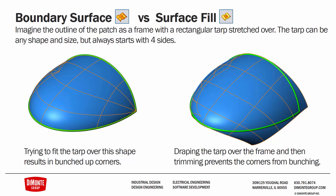A common question is: when should I use boundary surface versus surface fill? An easy way to think about it is to visualize the patch outline as a frame with a rectangular tarp stretched over it. The tarp can be any shape but always starts with four sides. If you use the boundary surface on a non-four-sided profile, the four-sided tarp gets scrunched and bunched in the corner — that's the degenerate point. With surface fill, you're draping a large four-sided tarp over the shape and trimming it afterward, so the flow of the surface is much more relaxed and isn't bunched up in the corner.